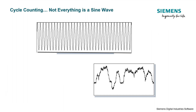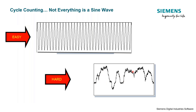Knowing how many cycles we've had of a certain load, we can use Miner's rule, we can calculate damage, etc. That all makes sense and is easy to do when we have easy things like sine waves, where we can easily tell how many sine waves we've had and what level they're at. But realistically, we don't usually deal with simple sine waves — we deal with things that look more like this. How would you cycle count this? How many cycles are there, and what level are those cycles? It's a little bit difficult to tell at first glance.